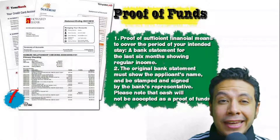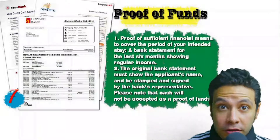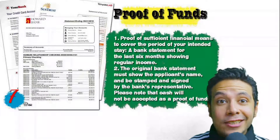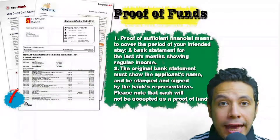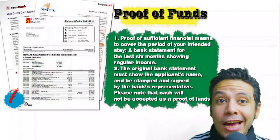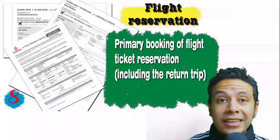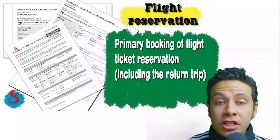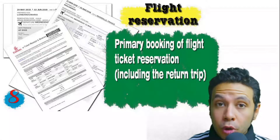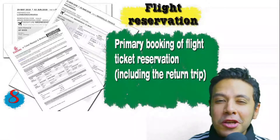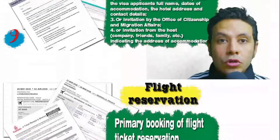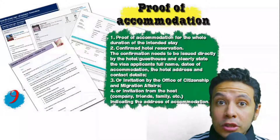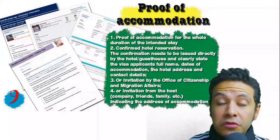You will also need to provide proof of sufficient funds — a bank statement showing your balance for at least six months. The original bank statement must show your name and be signed and stamped by bank representatives. Remember that cash will not be accepted as proof of funds. You should also provide a flight reservation — it could be an initial booking, but in some minor cases a confirmed booking is required. The flight reservation must include a return ticket.